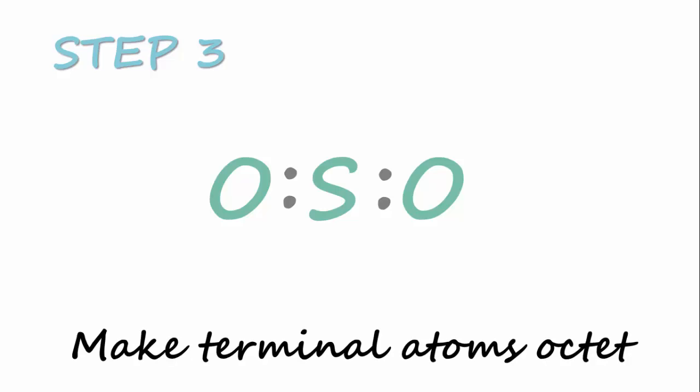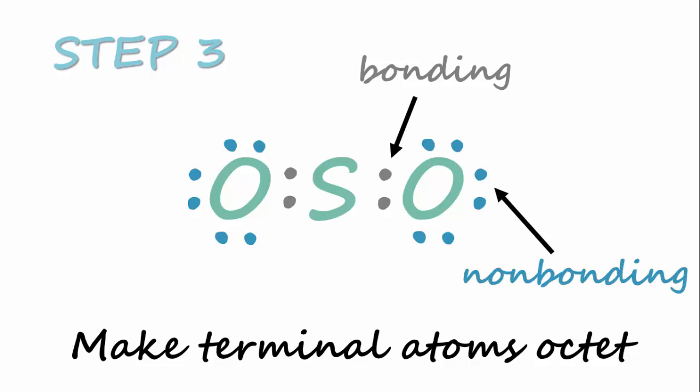Step 3, add electron pairs so that each terminal atom has an octet, which consists of eight electrons. Notice that the electrons between the atoms are called bonding electrons, while the ones that are not sandwiched between the atoms are called non-bonding electrons.